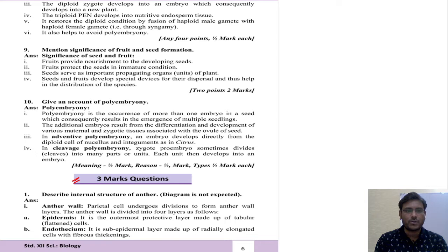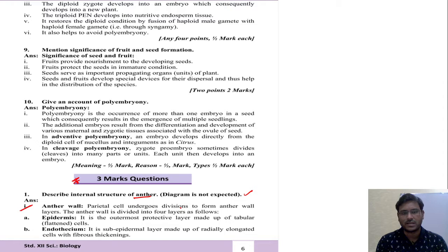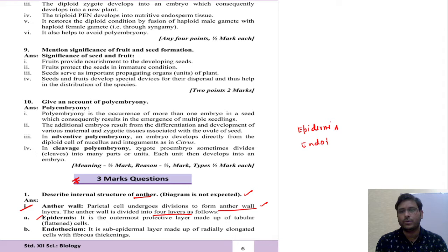For the 3-mark question, we are going to talk about the internal structure of anther — diagram is not expected. So anther wall: parietal cells undergo division to form the anther wall. Anther wall consists of 4 layers. The outer layer is epidermis, then endothecium, then middle layer, and then tapetum.